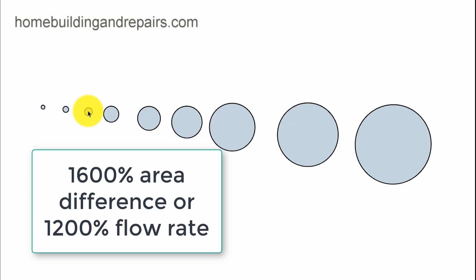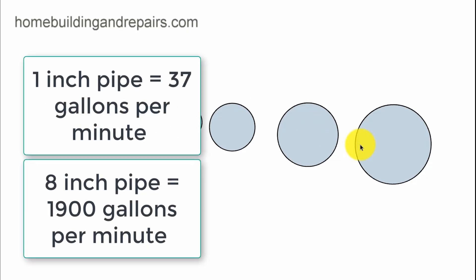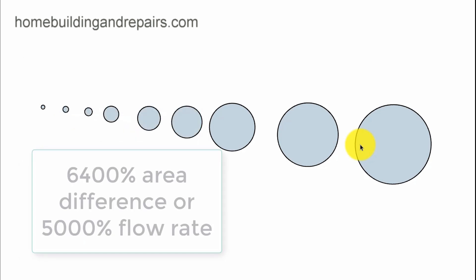A 1,600% increase in volume does not add up to the flow rate. You can't just take the area of a circle and assume that that's going to provide you with the same flow rate, because we have a difference. 1,600% difference in the area between a 4-inch and a 1-inch. And we only have a 1,200% increase in water flow. When we go from a 1-inch to an 8-inch, we have a 5,000% increase in the flow rate and a 6,400% increase in the area of the circle.